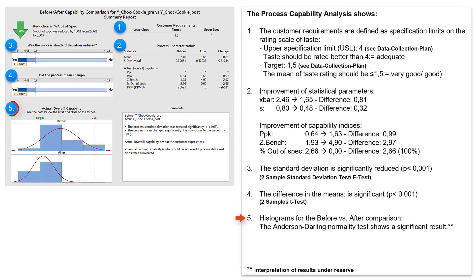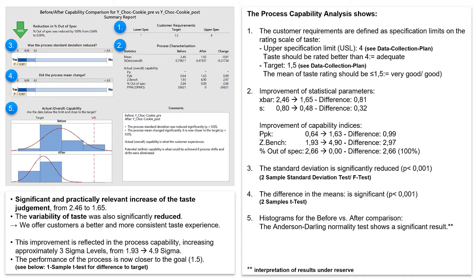The histograms for the before-after comparison with the overlay target and the upper specification limit demonstrates these changes. The related Anderson-Darling normality test indicates a significant deviation from the normal distribution. Thus again the results must be interpreted under reserve. But we can see that we clearly improved our chocolate cookies.